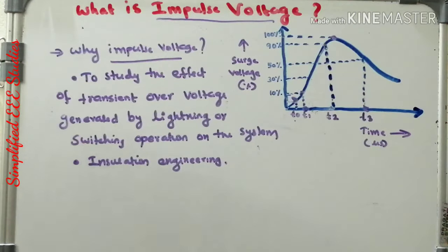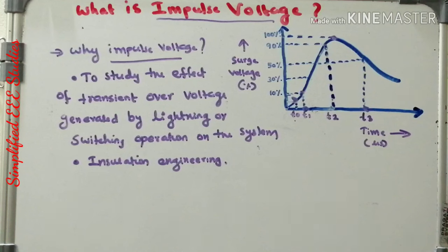Impulse voltage can be generated by using different techniques. One simple example is by using an impulse generator — you can generate impulse waveforms, either impulse voltage waveforms or impulse current waveforms.